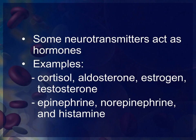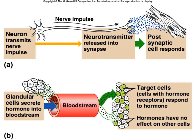Some neurotransmitters act as hormones. Examples of those are cortisol, aldosterone, estrogen, testosterone, epinephrine, norepinephrine, and histamine. The diagram above, labeled A, is showing you a neurotransmitter acting as a hormone.